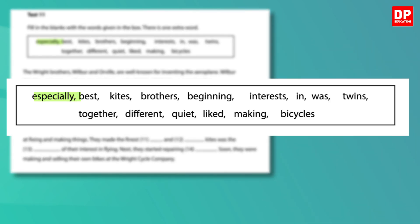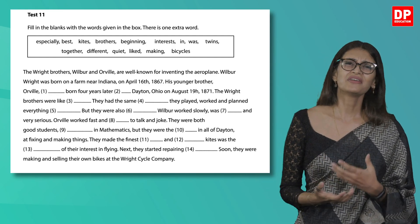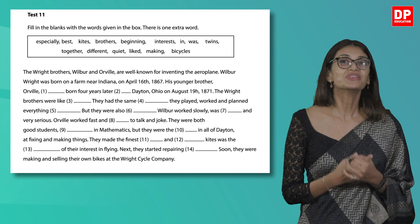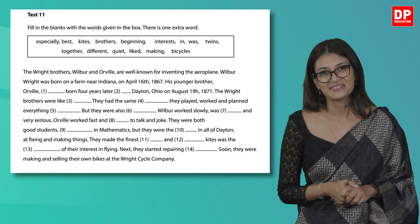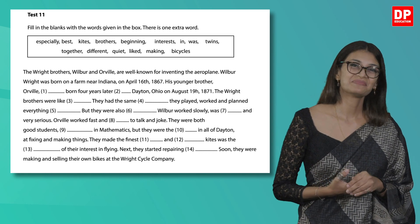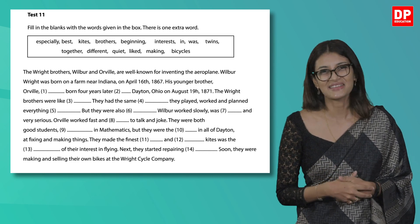Especially, best, kites, brothers, beginning, interests, in, was, twins, together, different, quiet, liked, making, bicycles. Let's now read the passage and figure out what it's about and use the most suitable words. It is a description of the Wright brothers, Wilbur and Orville. Let's read it together, shall we, and figure out what suits the blanks the best.